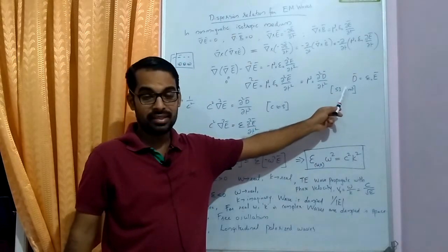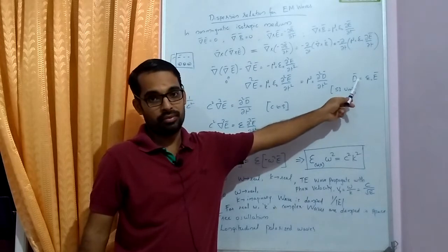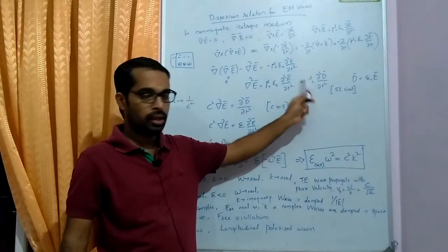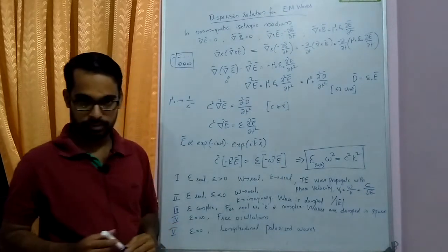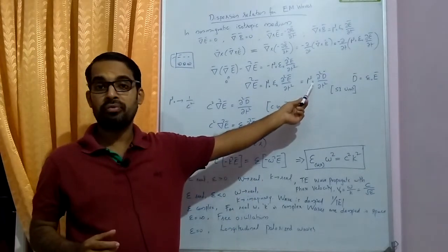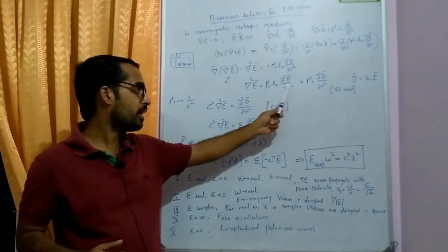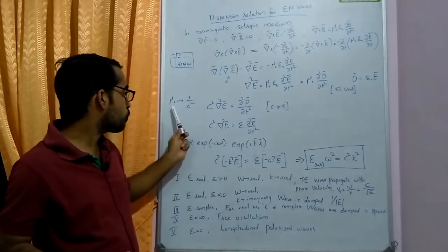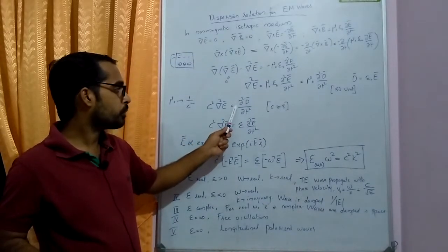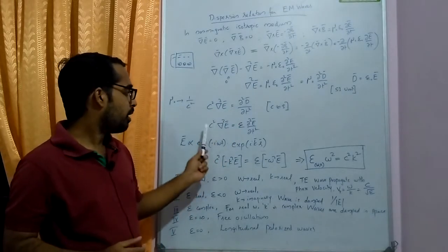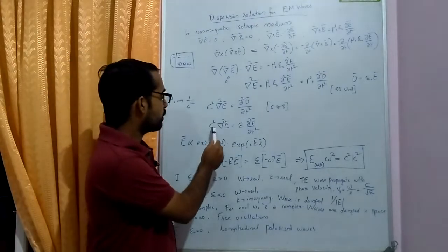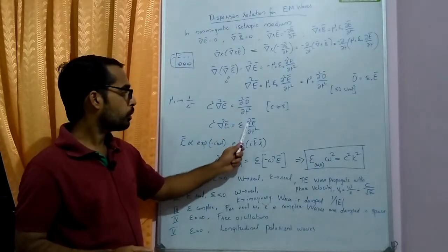Since epsilon_0 * E = D (the displacement vector) in SI units — noting that D = epsilon_0 * E + P — this becomes mu_0 * dou² D by dou t². To convert to CGS, we replace mu_0 with 1/c², so this expression becomes c² * del² E = dou² D by dou t².